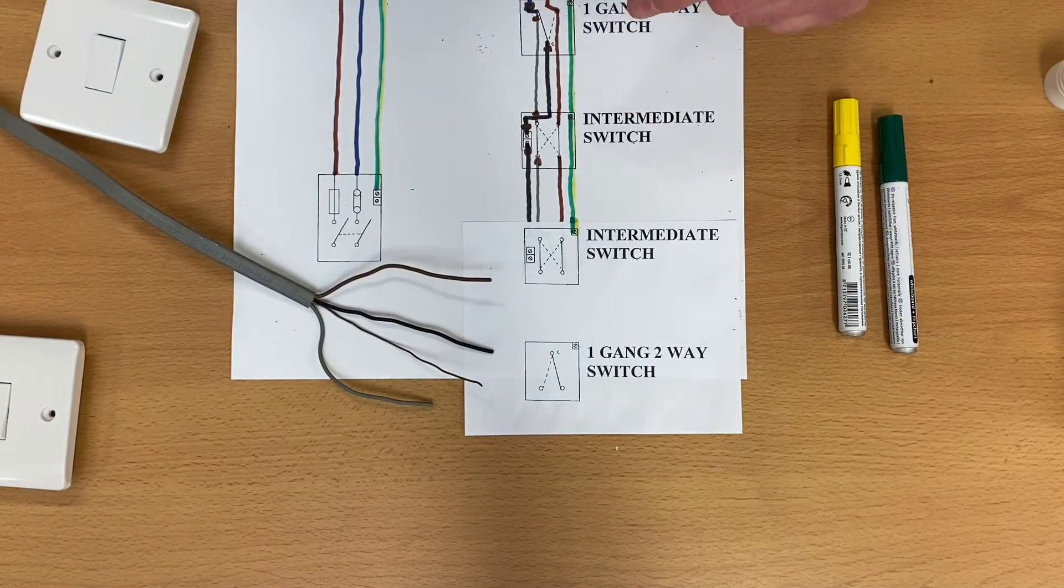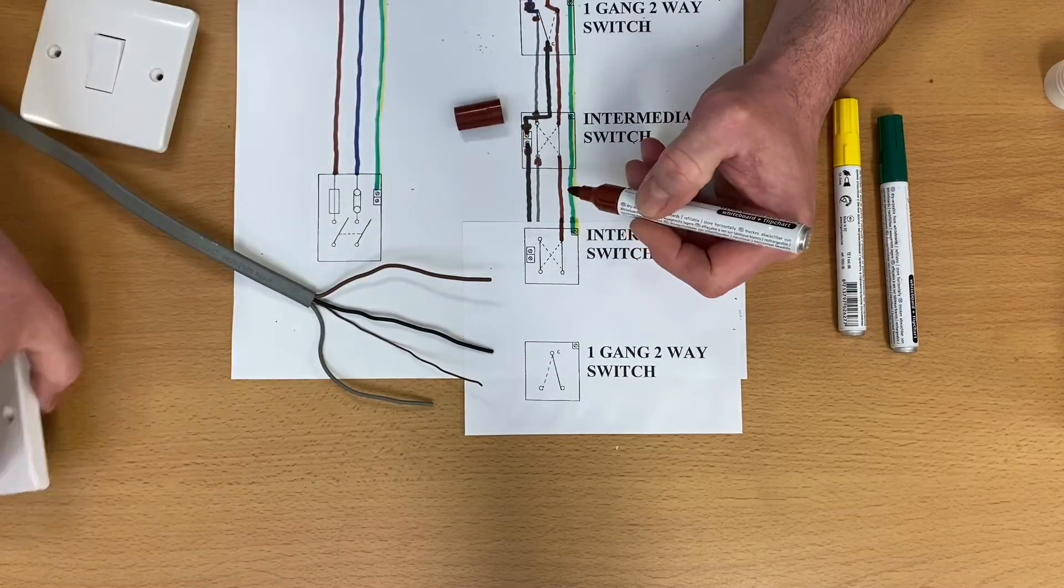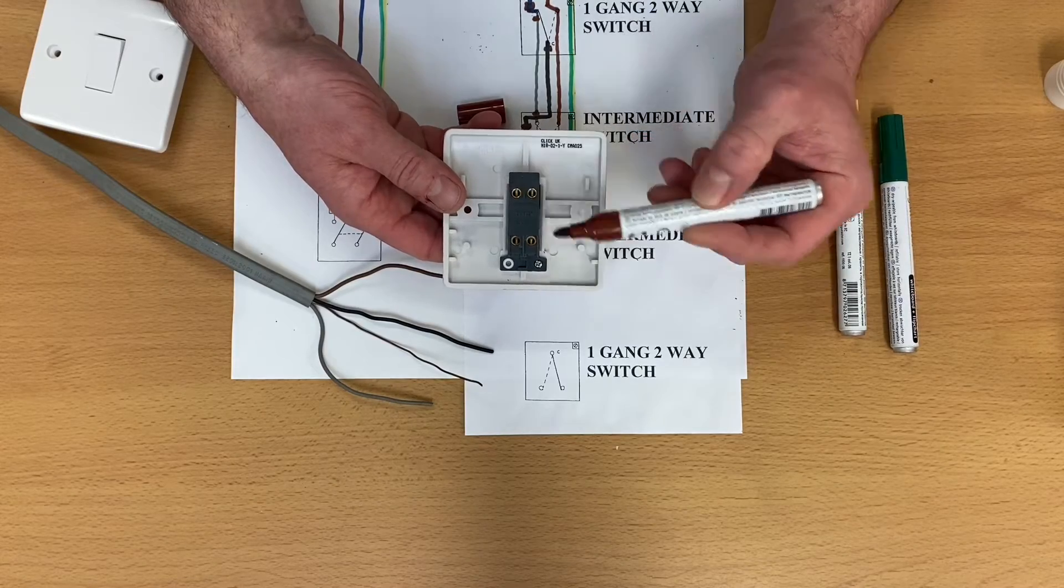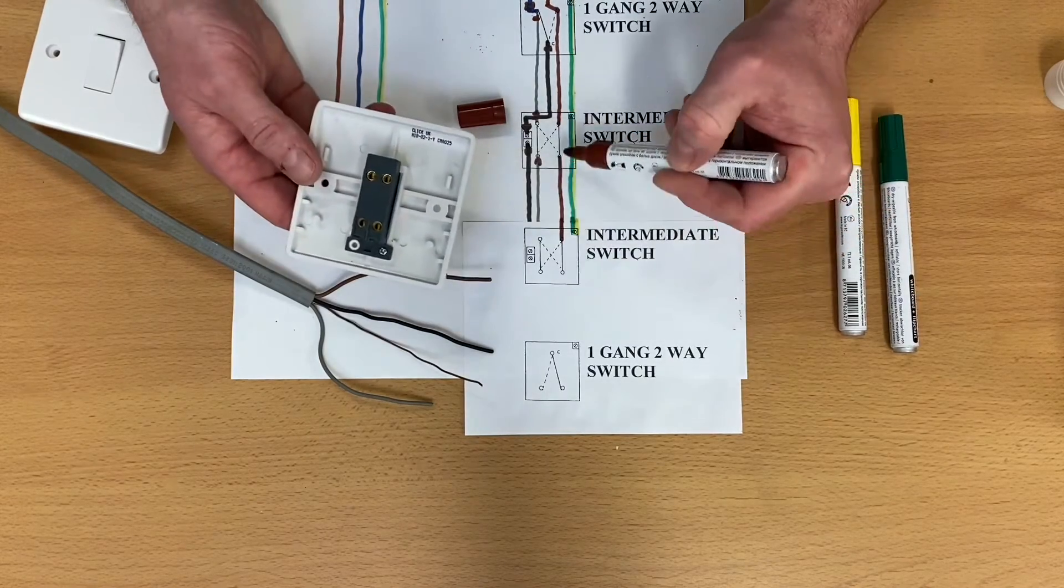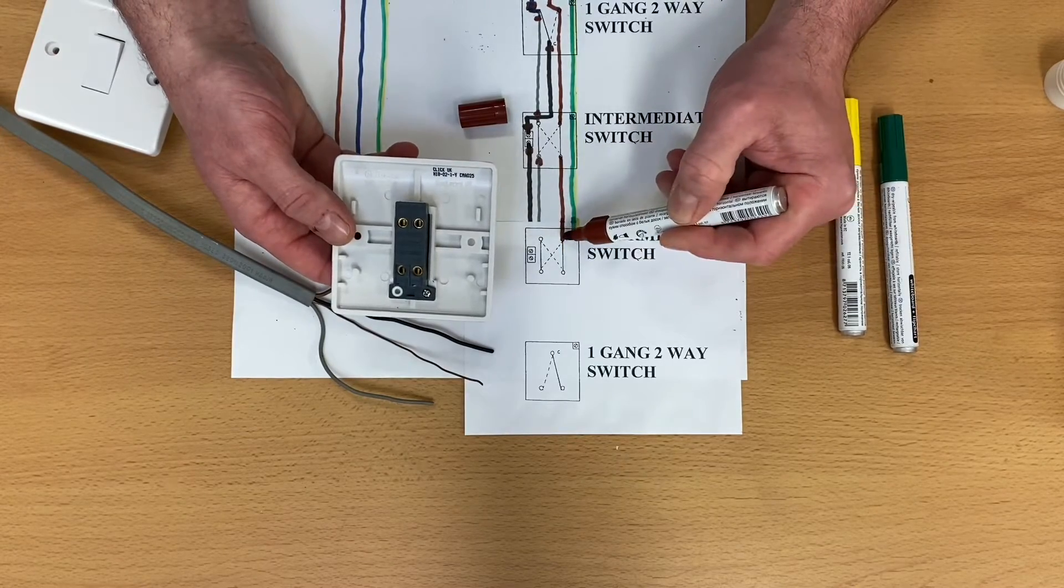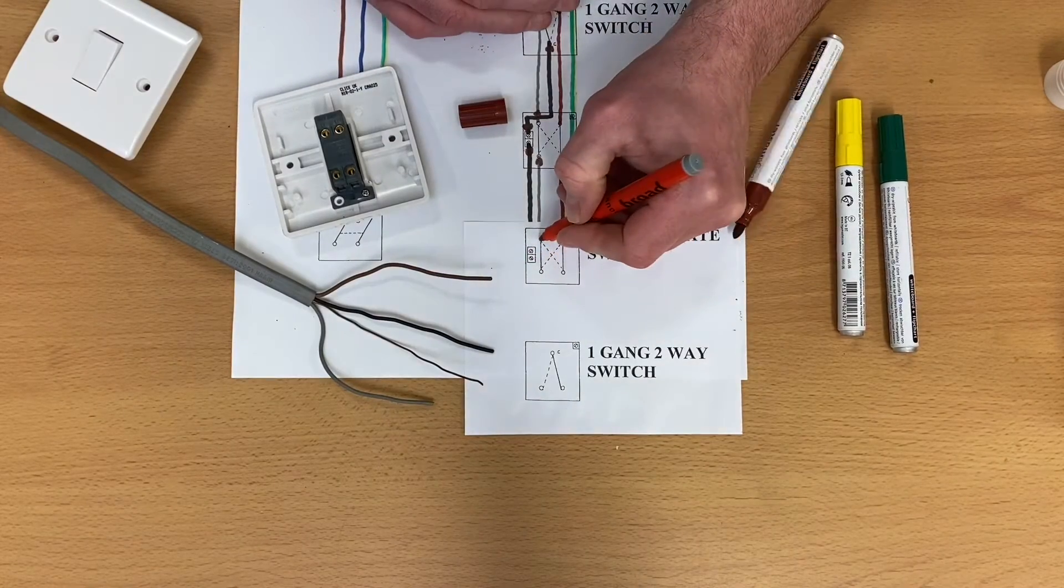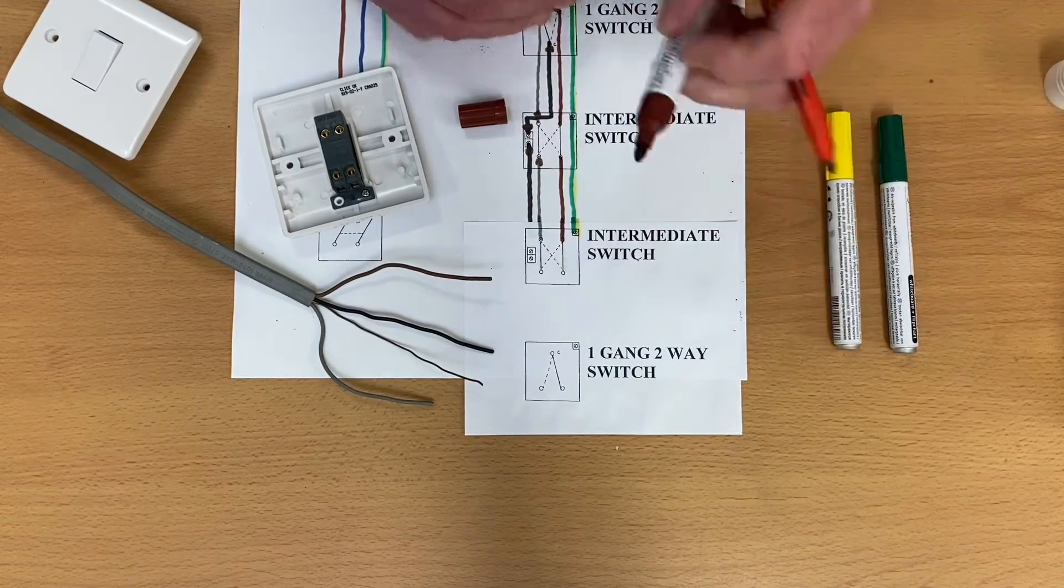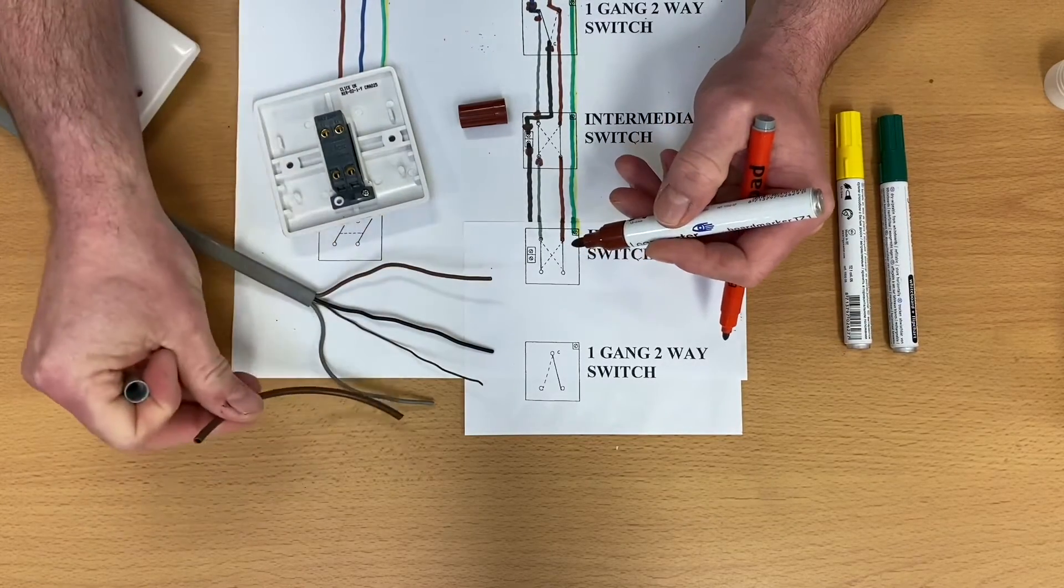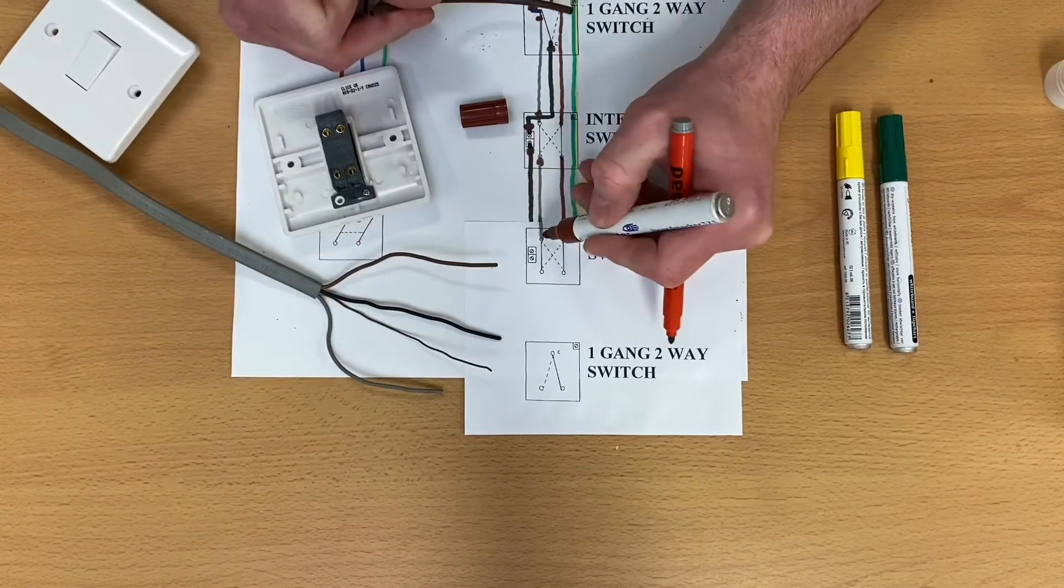We've still got the three-core. So we bring the brown down. The brown now goes into intermediate switch. Remember on the intermediate switch, we are either in the top two terminals or the bottom two terminals. So this three-core coming down, I'm effectively putting into the top two terminals. So the brown one goes in here. We've got our grey conductor, which again will need to be identified with brown sleeving. Remember, as it's a switching line conductor, we'll have to oversleeve our grey conductor and our black conductor in order to identify them as switching lines.